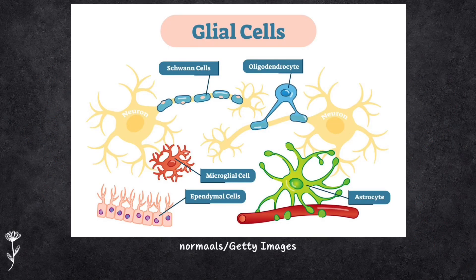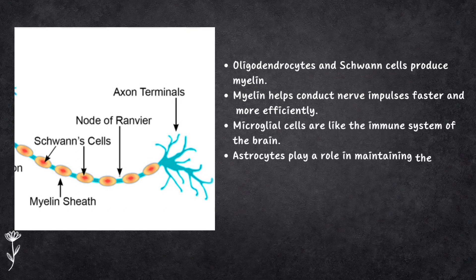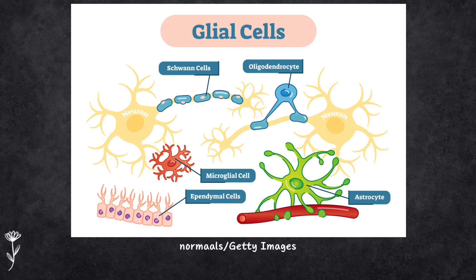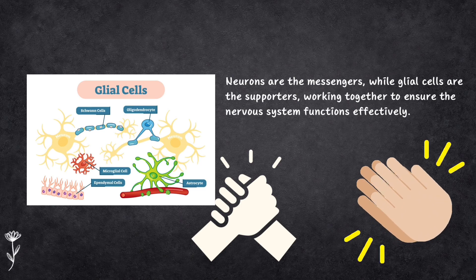Besides neurons, there are glial cells that support and protect neurons. Oligodendrocytes in the central nervous system and Schwann cells in the peripheral nervous system produce myelin, a fatty substance that covers the axon and provides insulation, helping conduct nerve impulses faster and more efficiently. Microglial cells are like the immune system of the brain, responding to inflammation and protecting the brain from harmful microorganisms. Astrocytes play a role in maintaining the environment around neurons — providing nutrients, cleaning up waste products and supporting synapses. These glial cells contribute to the health and proper functioning of neurons and are involved in various neurological disorders including autism, Alzheimer's disease and psychiatric disorders.